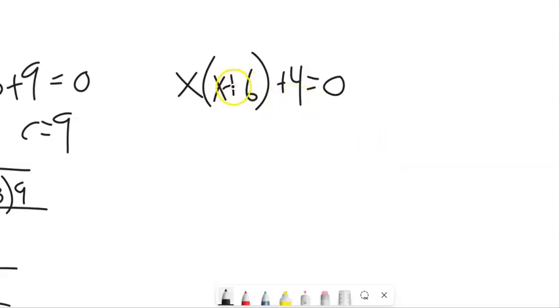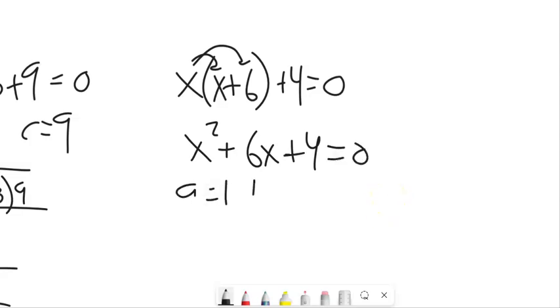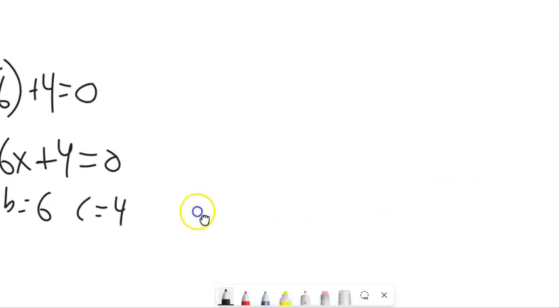Looking at this one to solve. That should be a plus sign. Looking at this one to solve. X times X plus 6 plus 4. This isn't in the same form that we're used to. But we can get into that form. Let's distribute that X into there. X squared plus 6X plus 4 equals 0. And you know what to do. A is 1, B is 6, C is 4. Plug them in. Make sure you're not taking the square root of a negative. And you are on your merry way.